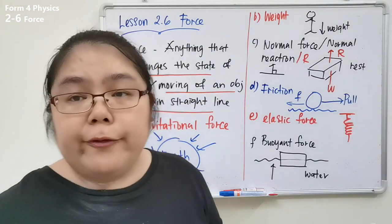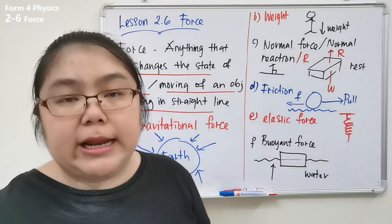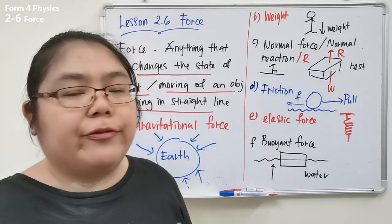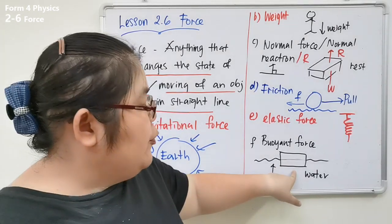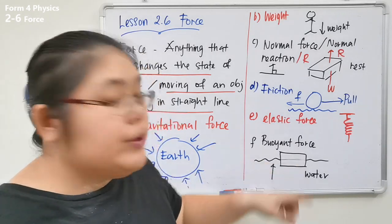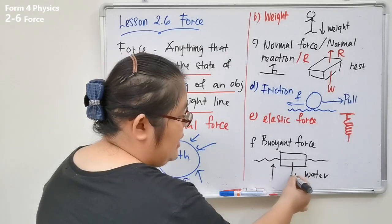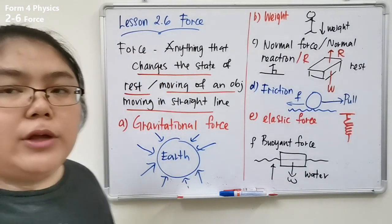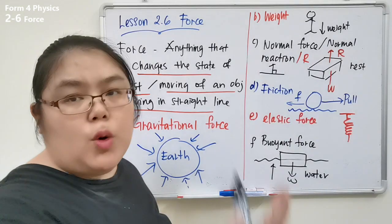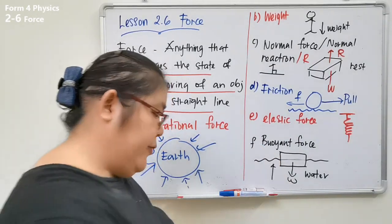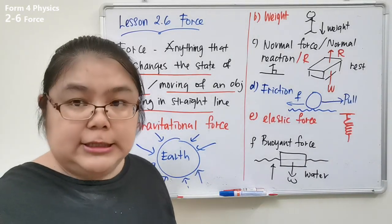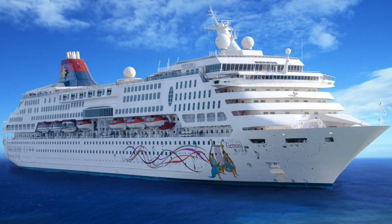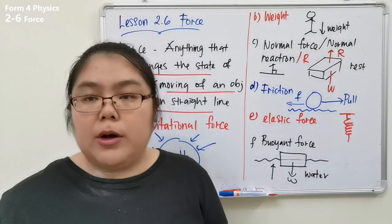The last force example is buoyant force, also called upthrust force — a force acting upward. This occurs when an object floats in water. The object has weight acting downward, and another force pushes the object upward, called upthrust or buoyant force. That's why ships can float on the sea.